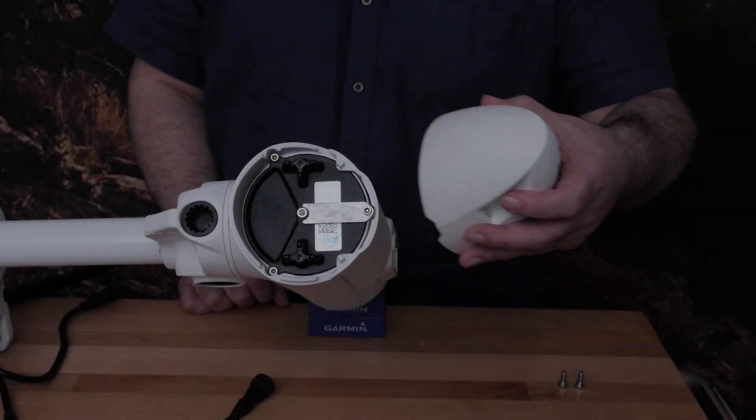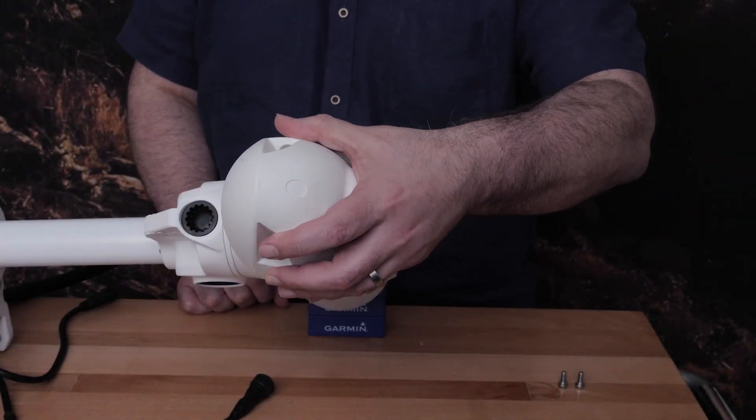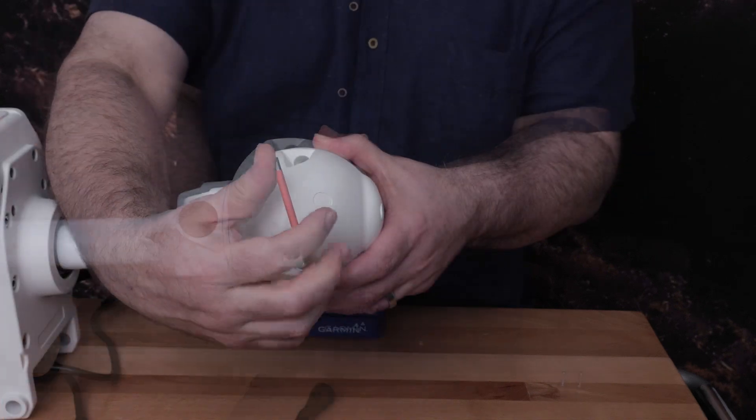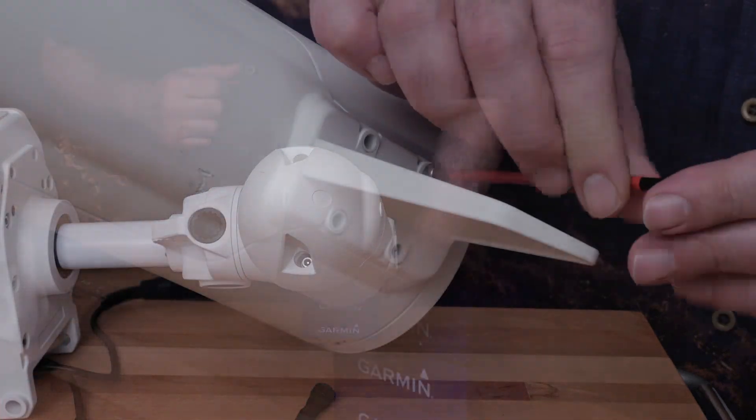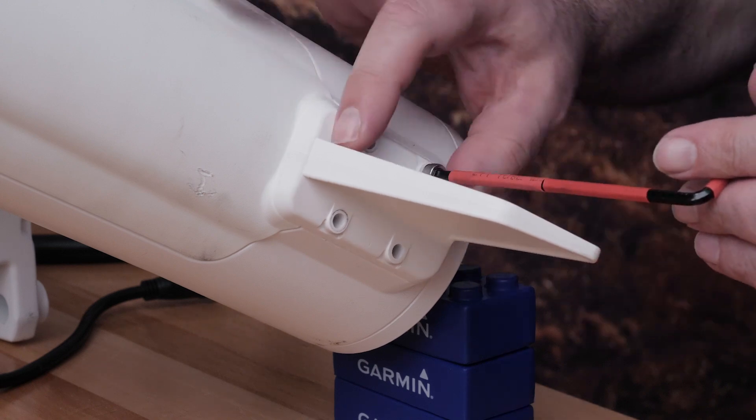On the 90 inch Kraken trolling motor, the nose cone and skeg will need to be installed on the motor using a 4 millimeter hex bit or wrench. For the skeg, make sure the longer end faces the propeller side.